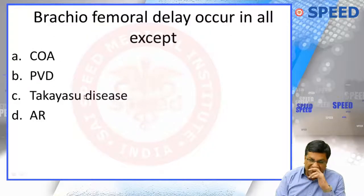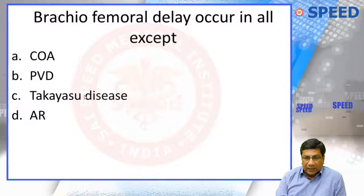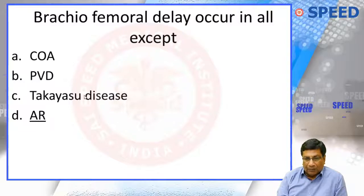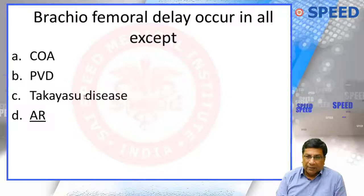Radio-femoral delay can occur in all arterial diseases — like coarctation, peripheral vascular disease, and Takayasu's disease — except in aortic regurgitation. In aortic regurgitation, your lower limb pulse and pressure is actually higher than the upper limb pressure. So this is the opposite condition, where lower limb pressure and pulse is more than the upper limb — this occurs in AR.